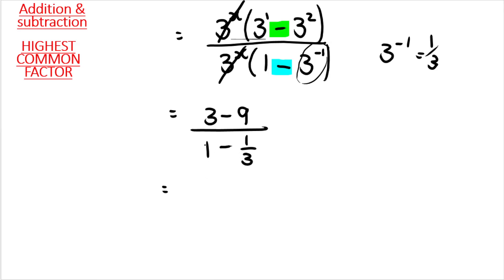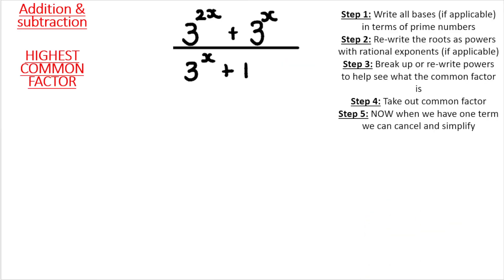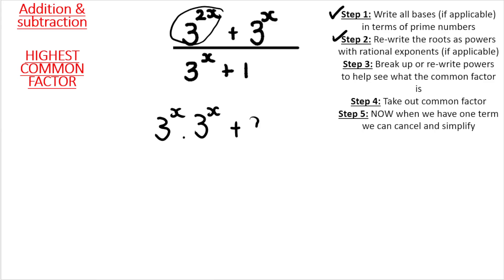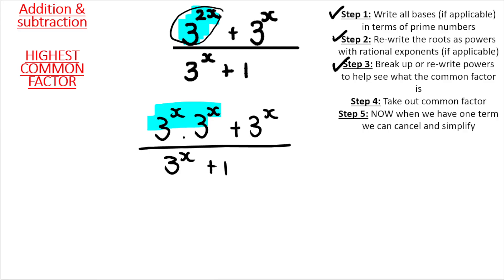Taking it from there, you can use your calculator, and ultimately you get negative nine. Now the second example: step one, write all bases in terms of prime numbers — done. Step two, no roots — done. Step three, break up the powers. Some students can see the common factor visually without writing it out, but it helps to rewrite it as shown, the same way as explained in the previous video.